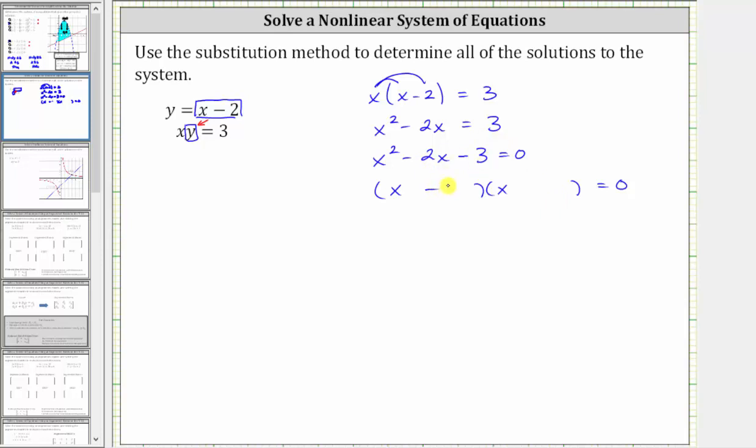This gives us x minus three and x plus one. The product on the left is equal to zero when x minus three is equal to zero or when x plus one is equal to zero. Solving these equations for x, we have x equals three or x equals negative one.